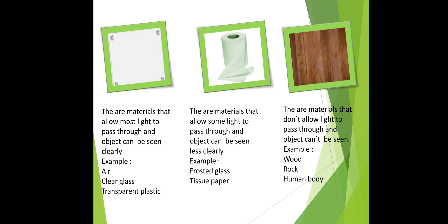Transparent materials allow most light to pass through and objects can be seen clearly. Examples include air, glass, and transparent plastic. Semi-transparent (translucent) materials allow only some light to pass through, and objects can be seen less clearly.